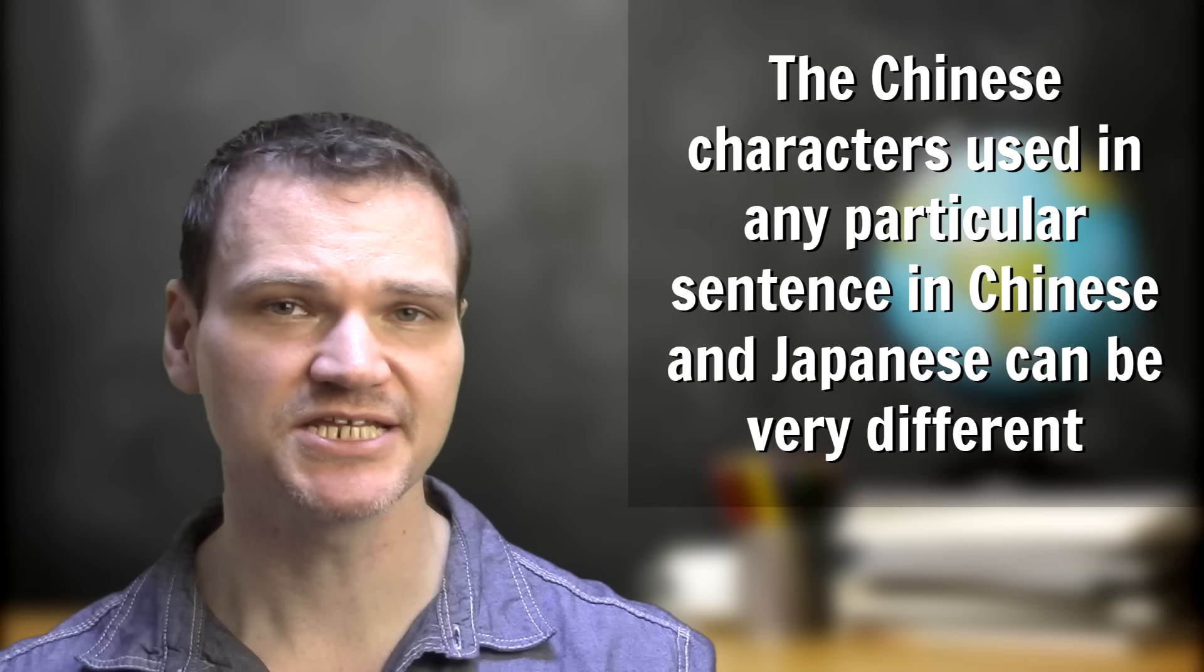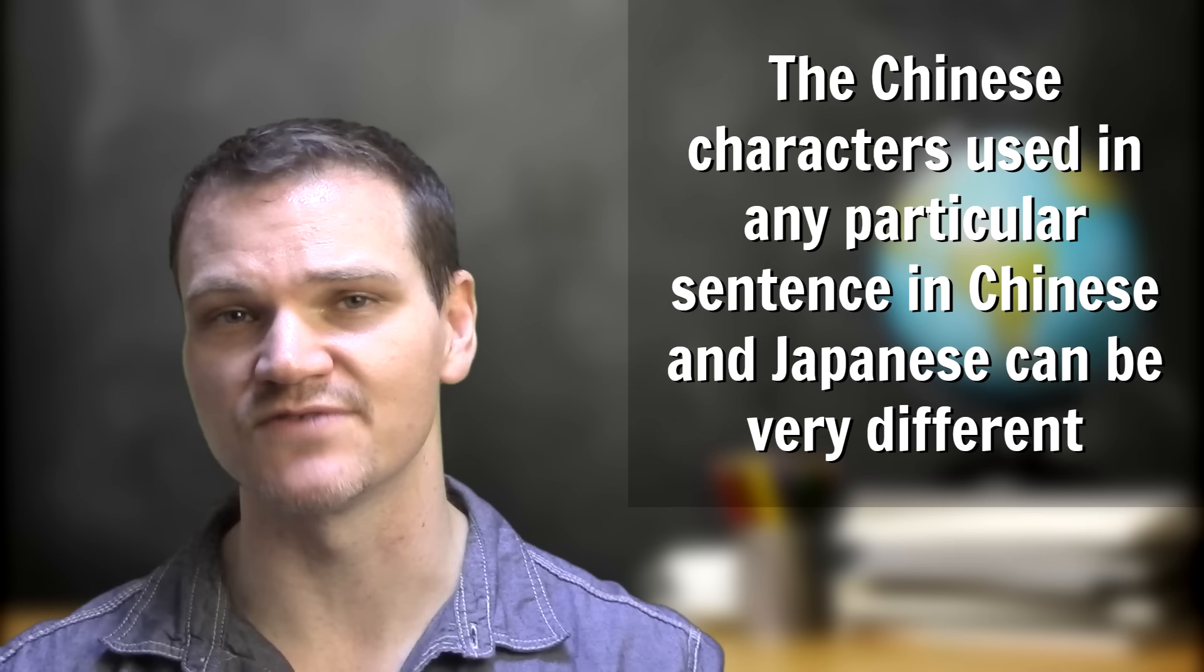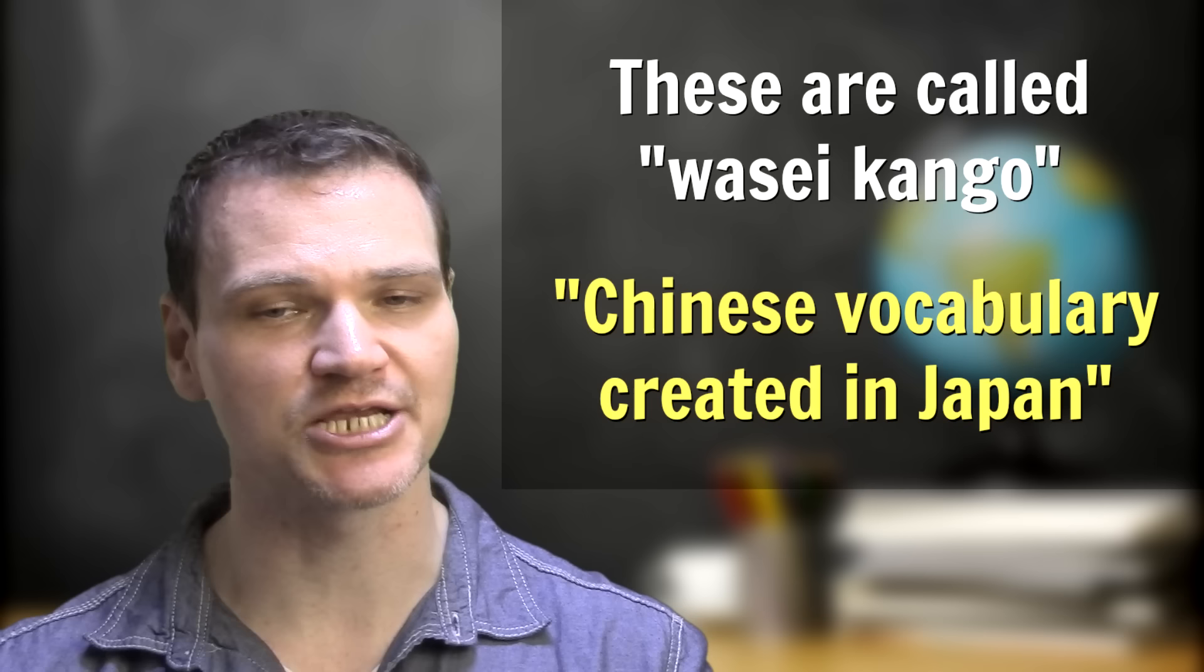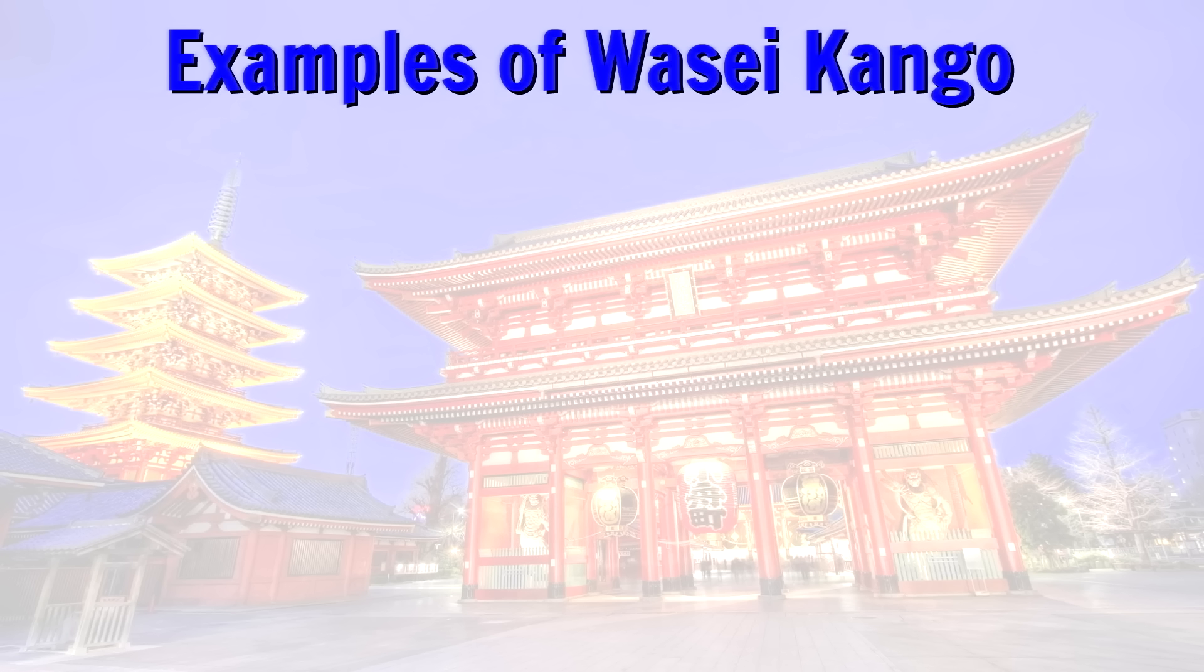The Chinese characters used in any particular sentence can be very different from those used in the other language for a sentence of similar meaning. And in Japanese there are a lot of compound words that were created from Chinese characters, but those compound words don't actually exist in Chinese. These are called wasei kango, which means something like Chinese vocabulary created in Japan. Here are some examples of wasei kango.